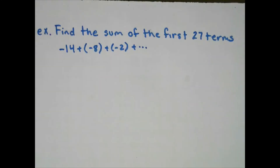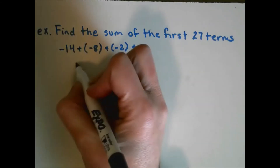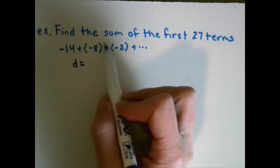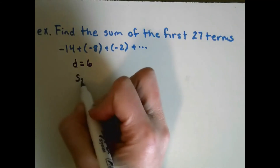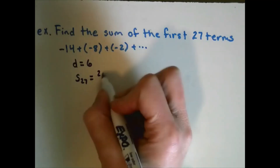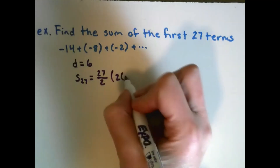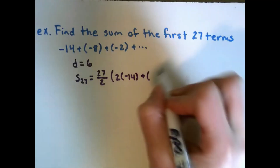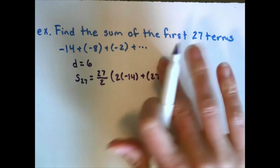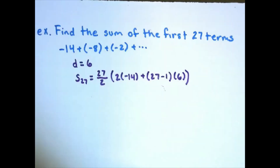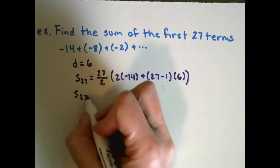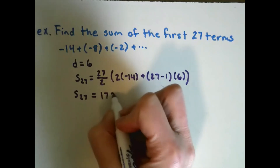Example: find the sum of the first 27 terms of negative 14 + negative 8 + negative 2 + … The common difference is 6. So S_27 = (27/2) · [2(−14) + (27−1)·6]. Type that into the calculator and the sum is 1728.